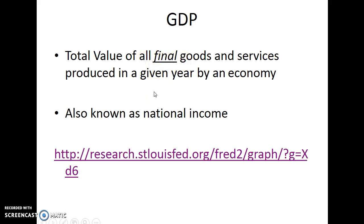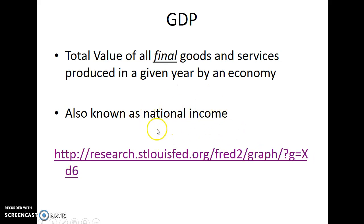One of the things to really recognize is the relationship between GDP and national income — they mean the same thing. National income gets used a lot on the AP exam, so once you get into the graphs where you're labeling real GDP on the horizontal axis, it means the same thing as economic growth and also national income.